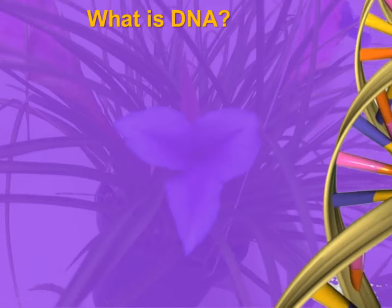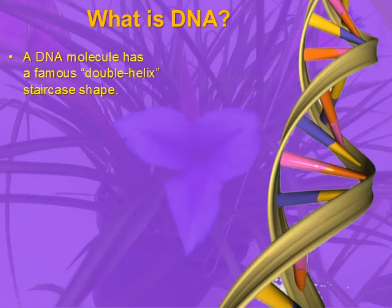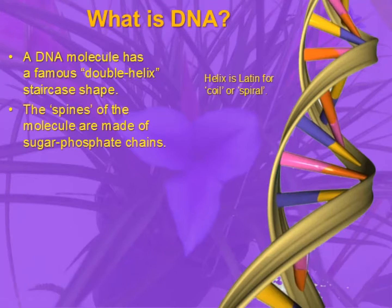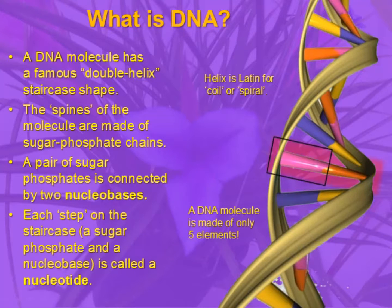So, what exactly is DNA? Well, you might have seen something like this before, and this is the famous shape of DNA, which is called a double helix. This is the staircase shape that you see. The spines of the molecule — the yellow bands that go around the outside — are made of sugar phosphate chains. And each pair of sugar phosphates, one on each side of the molecule, is connected by two nucleobases, which is what we call the coloured sticks in the middle of the molecule. A step on the staircase — a sugar phosphate and a nucleobase attached — is called a nucleotide.